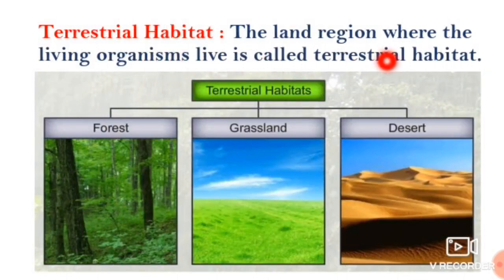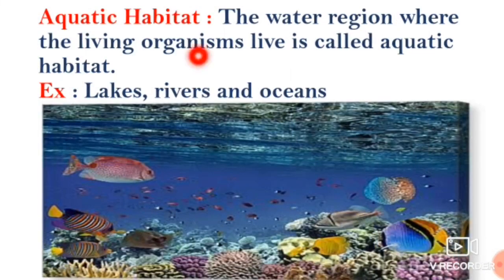What about terrestrial habitat? That is the land region. But aquatic habitat is the water region. Examples for aquatic habitat are lakes, rivers and oceans. Here is an image of water with different kinds of fish. The water region where the living organisms live is called aquatic habitat. Examples are lakes, rivers and oceans.